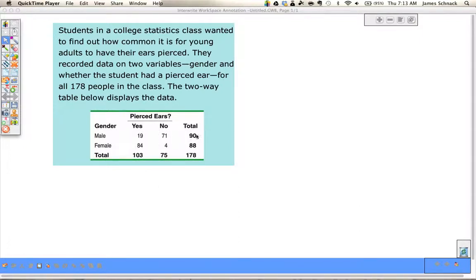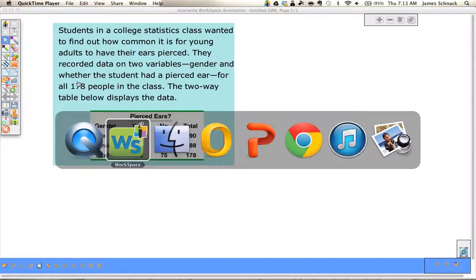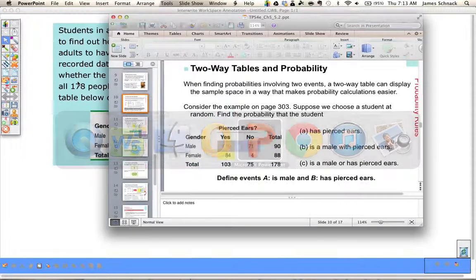We had 90 total males, 88 total females. There were 75 total students that didn't have piercings and 103 that did, for a grand total of 178 students in the class. Let's look at some questions that might be asked of us.